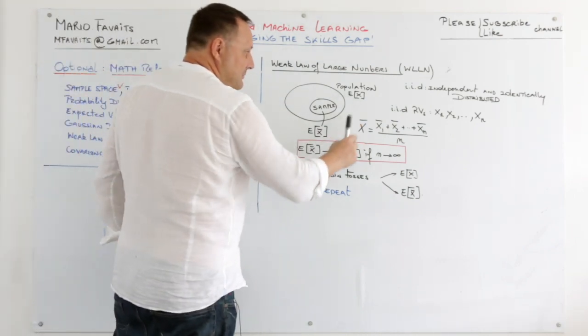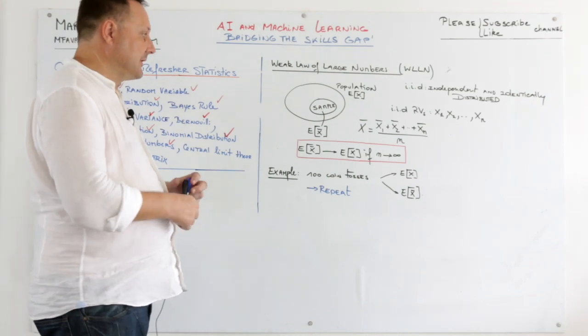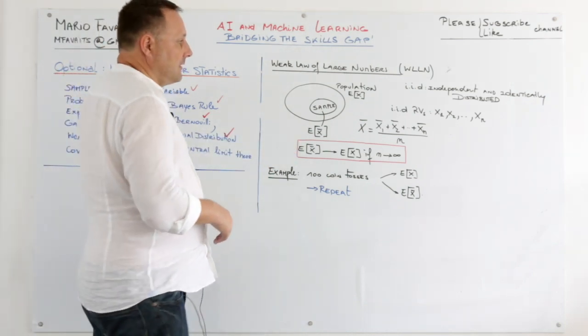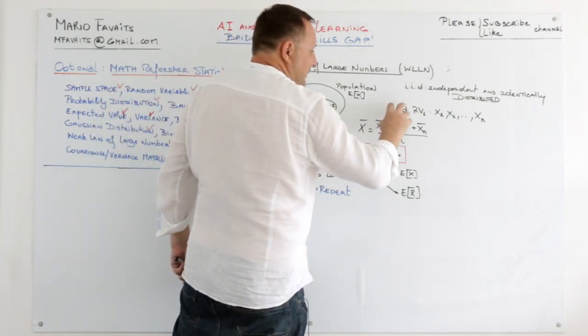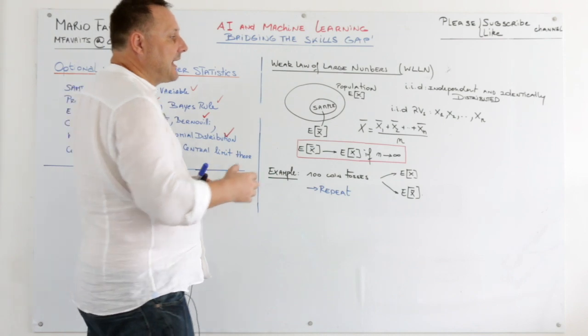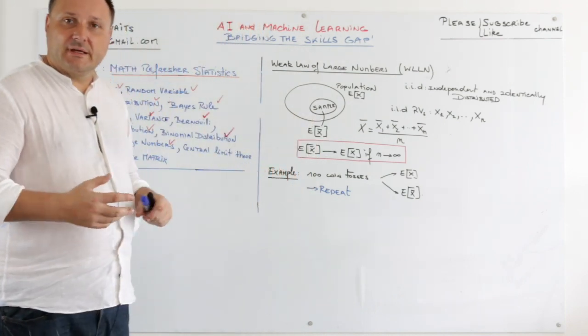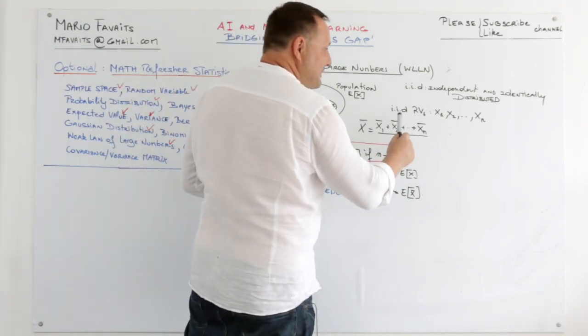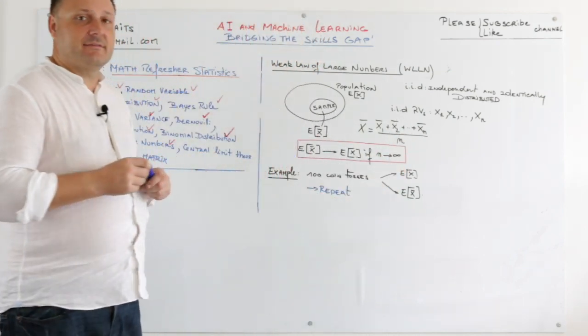So we have a population mean that we don't know, and we have a sample mean. So we have a set of random variables. One could be height, one could be something else. And these random variables are independent and identically distributed.